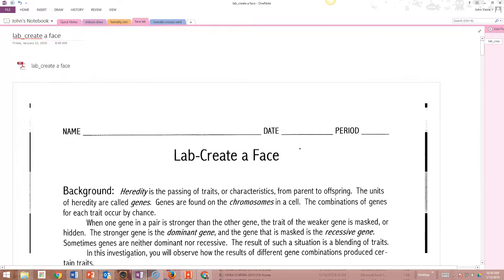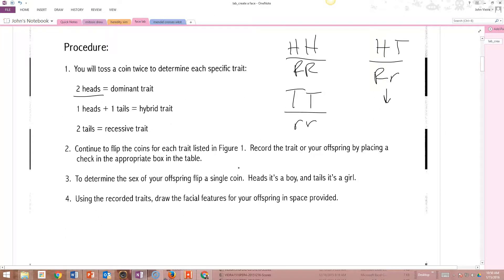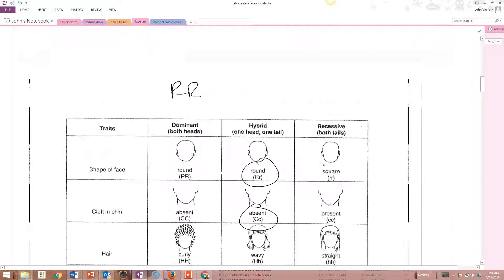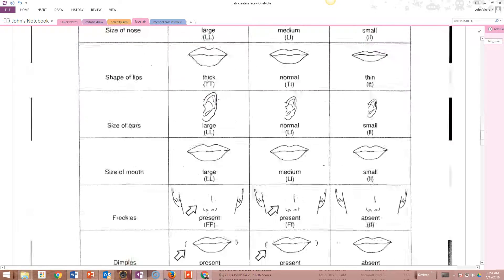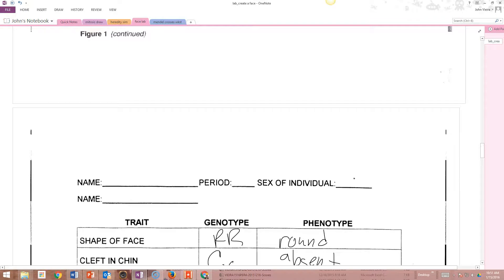And then you're going to get to the sex of the child to determine whether it's a boy or a girl. To determine the sex, you flip a single coin. Heads, it's a boy. Tails, it's a girl. So if you flip it, you get heads, and you're going to go over here and you're going to go, boy.